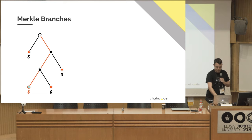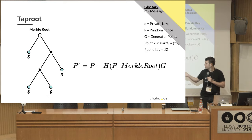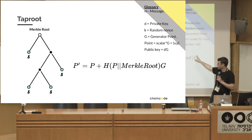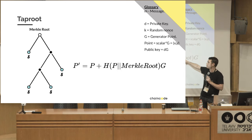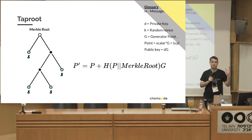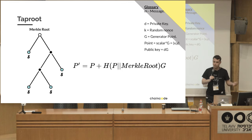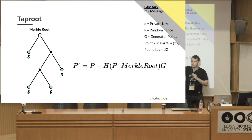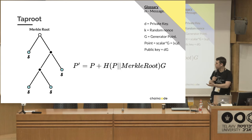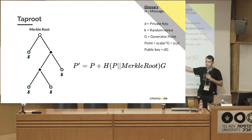If we combine pay-to-contract with Merkle branches, we get Taproot: we take the Merkle root of that script tree and use it as the commitment. For example, opening a Lightning channel: the public key comes from the multisig I showed — a multisig from party A to party B. If the Lightning channel closes cooperatively, they tweak the signature as shown, tweaking the private key to spend the money.